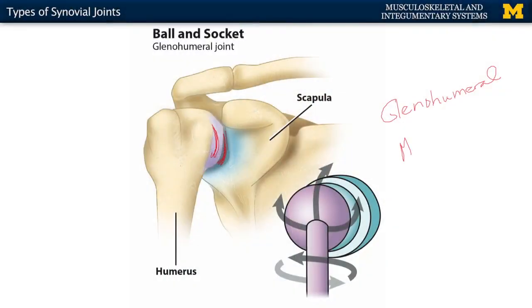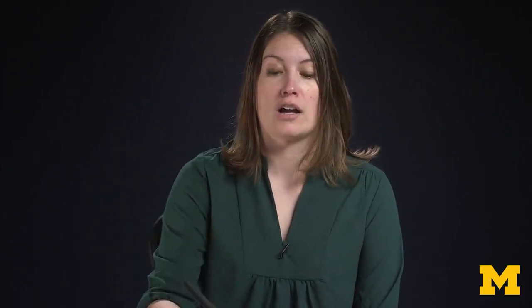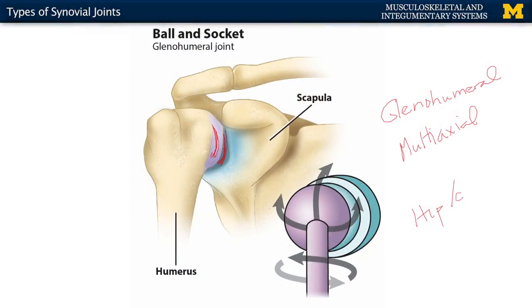These types of joints are what's referred to as multi-axial, meaning they can move in numerous axes — anteriorly, posteriorly, medial, and lateral. We'll talk about those different types of movements in more detail. So these are going to be the most freely movable of your synovial joints. The two main examples of ball and socket joints are your shoulder and your hip, or your coxal joint.